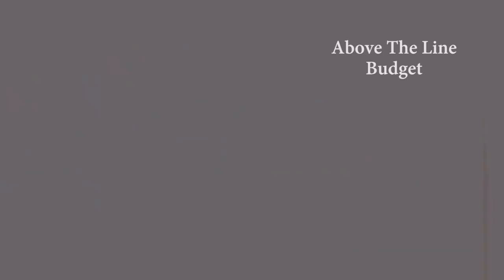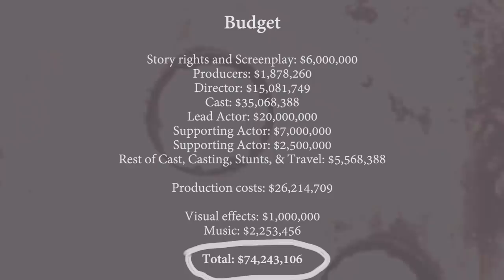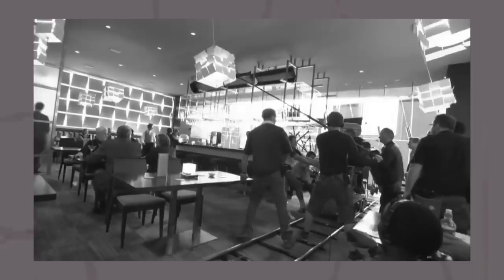Above the line items in a budget refer to the expenses of the individuals who influence the creative direction of the movie, such as the screenwriter, the director and actors — although they are not the only members with creative input in a film. Typically, a disproportionate part of the budget is allocated to these individuals, and in many cases the above the line budget can even be the largest component of the total budget.